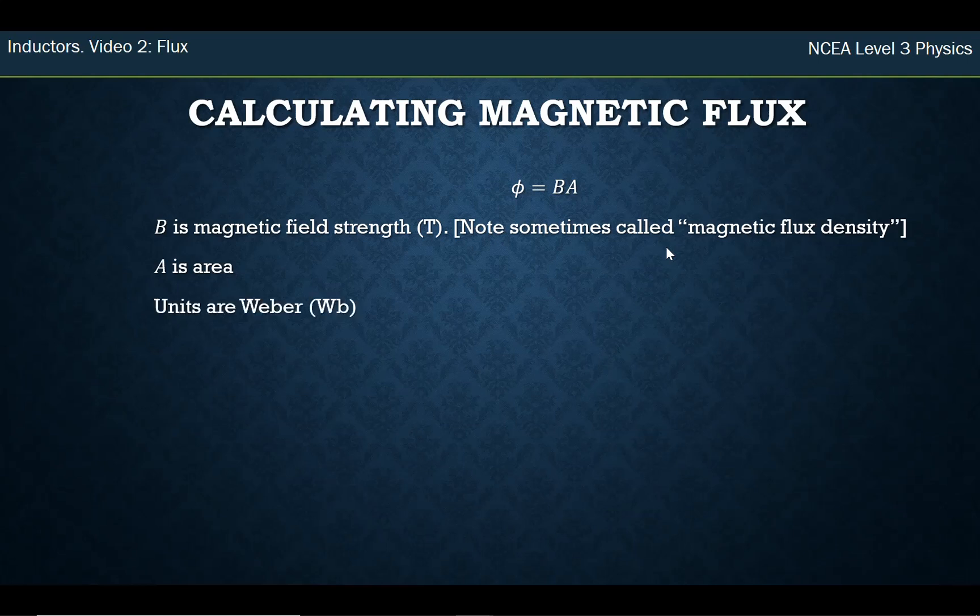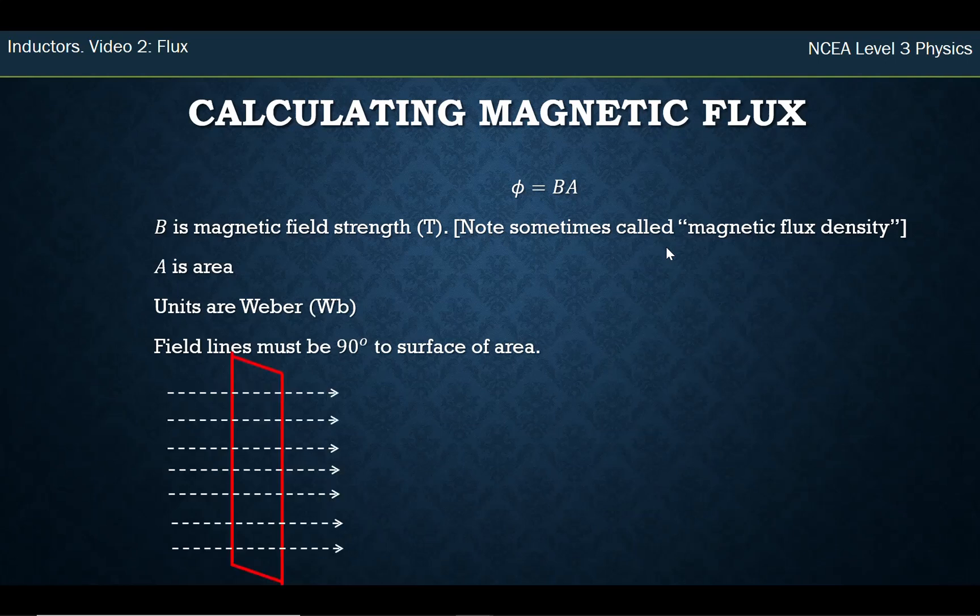A is the area, and the units for magnetic flux are in Webbers. All right, so you just take the amount of magnetic field strength going through an area. Remember, field lines have to be 90 degrees to the surface of the area, so for example, we could work out some flux here, but if I rotated that area and said I want to look at the flux now through this area, exactly the same size, but just rotated, there's no flux, because those field lines are not going 90 degrees to the surface of that area. All right, so zero flux there.